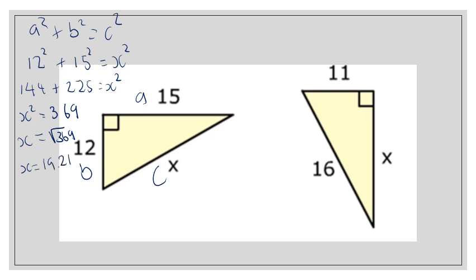OK, now on this second question, we are going to do the same thing. We look for our right angle. We look for the side opposite. That is going to be C. We have got A and we've got B. It doesn't matter which way around we put those. But this time we get 11 squared plus X squared equals 16 squared.